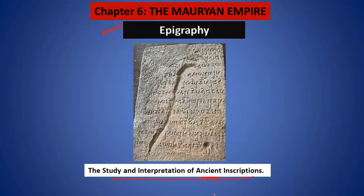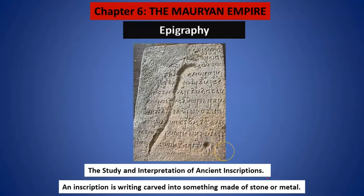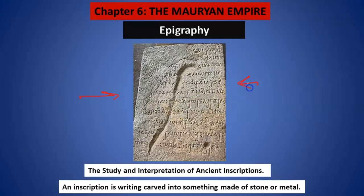Can you please tell us what is an inscription? When you engrave something — jab aap kisi stone ya metal mein — when you try to cut and write something in a stone or a metal, such kind of writing is known as inscription.